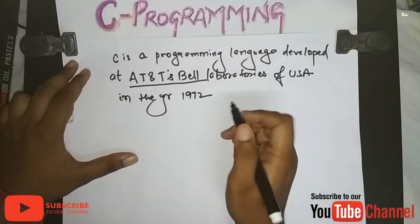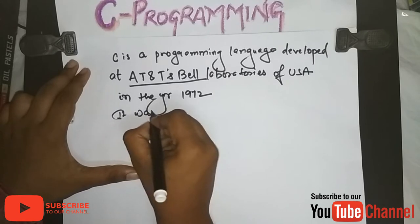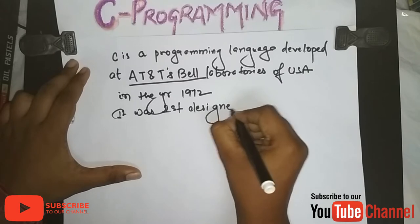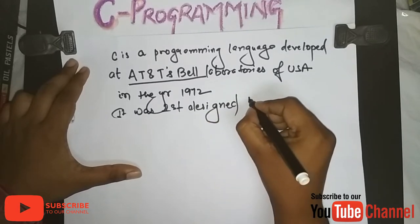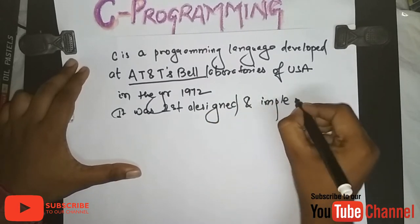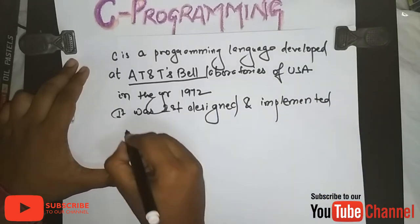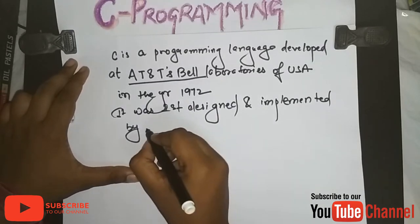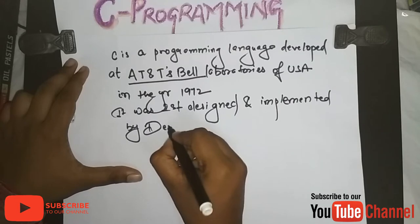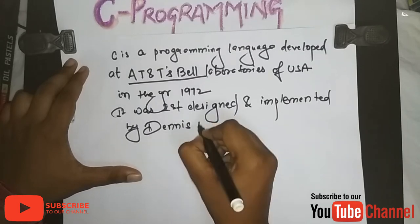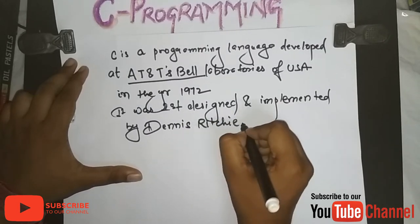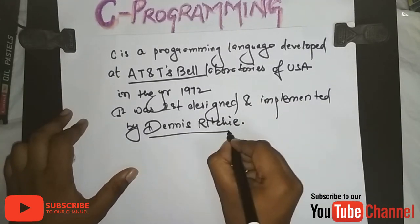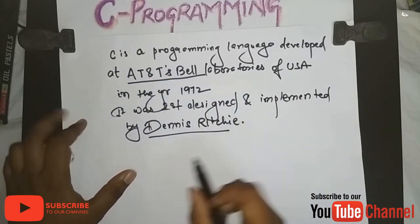Who invented it? It was first designed and implemented by a computer scientist named Dennis Ritchie. This was the name of the person who developed the C programming language.